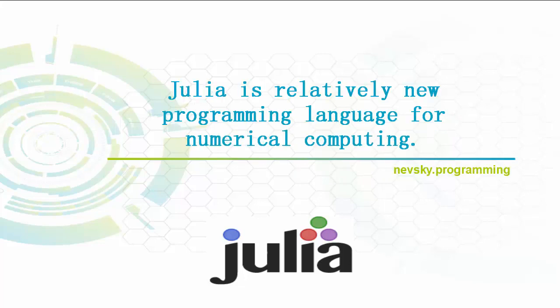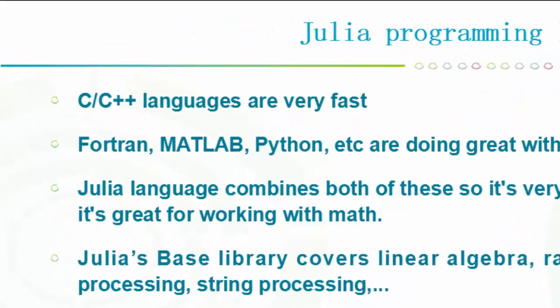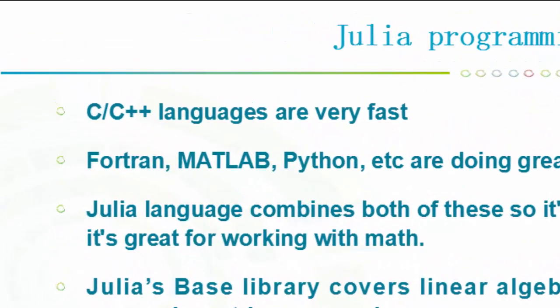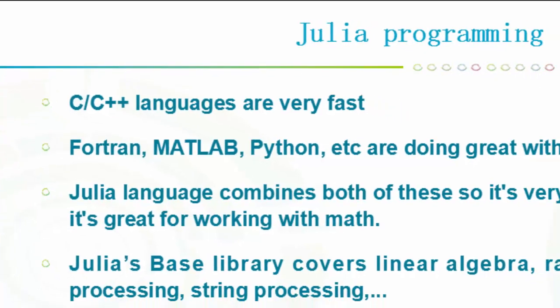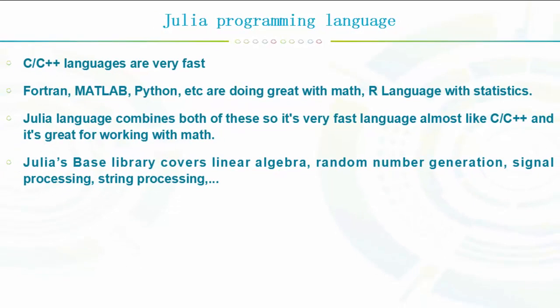Julia is a relatively new programming language for numerical computing. As we know, languages like C and C++ are very fast, while on the other side Fortran, Matlab, Python and so on do great with math — and R, for example, is great with statistics. Julia language combines both of these.